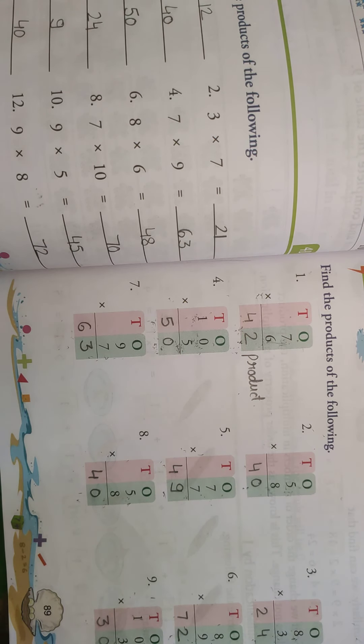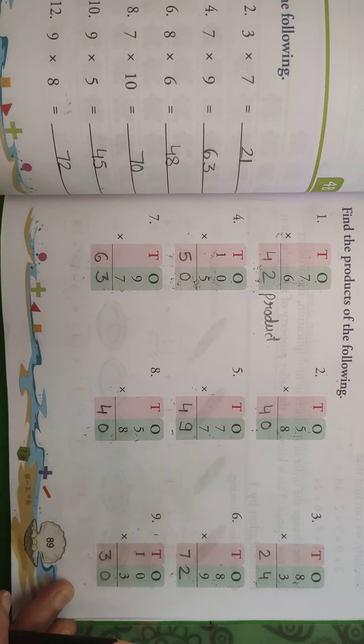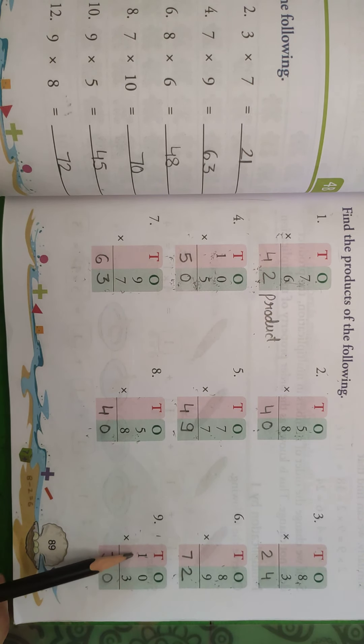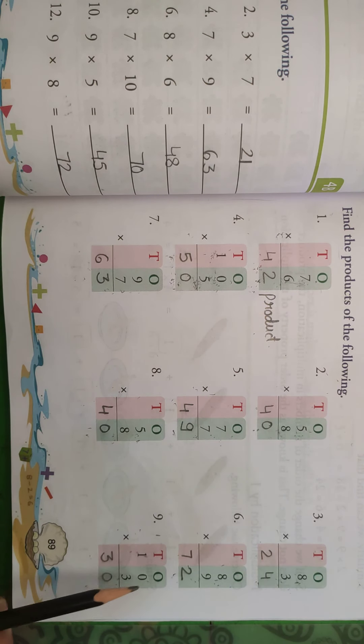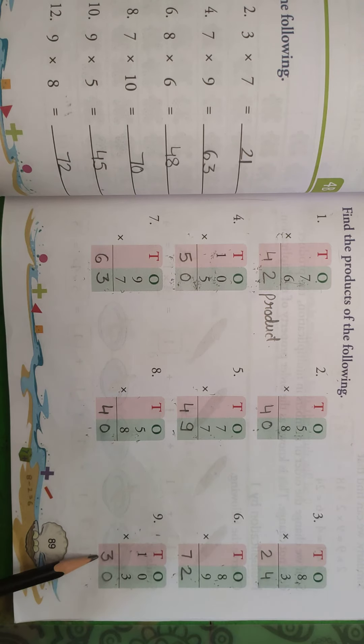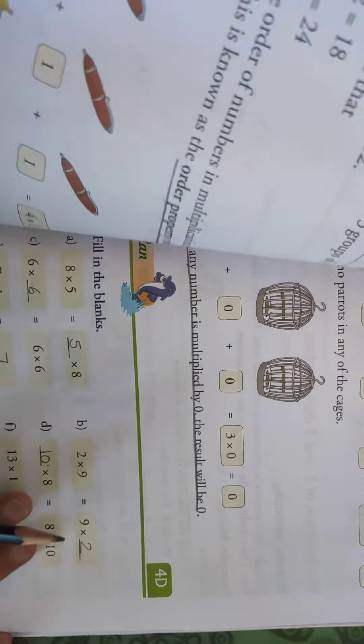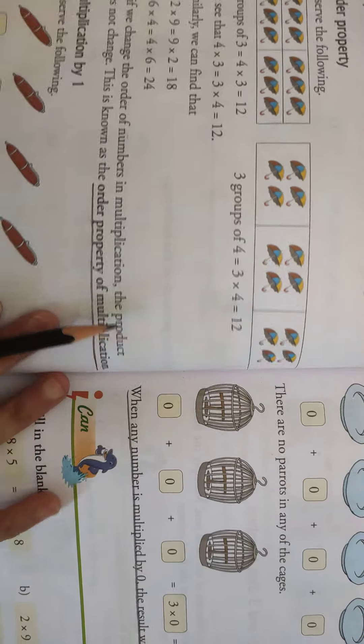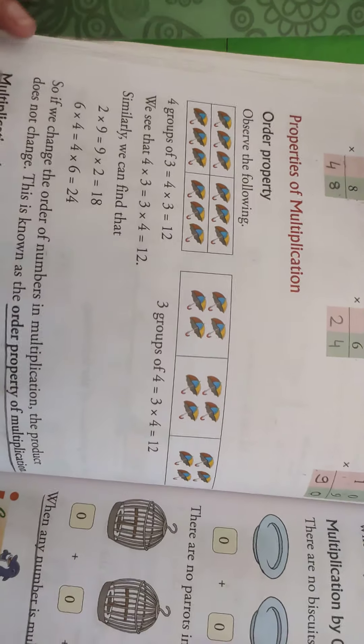Then 9, question, tens and ones ki place, hum ne as it is rakhi hai. Then what we will do, 1 0 means 10 multiplied by 3, so 3 0s a 0, and 3 1s a 3. Or we can do like this also, 3 10s a 30. Okay, I hope all of you understand till here. It is easy beta, if you do, if you learn the tables, it is very easy.